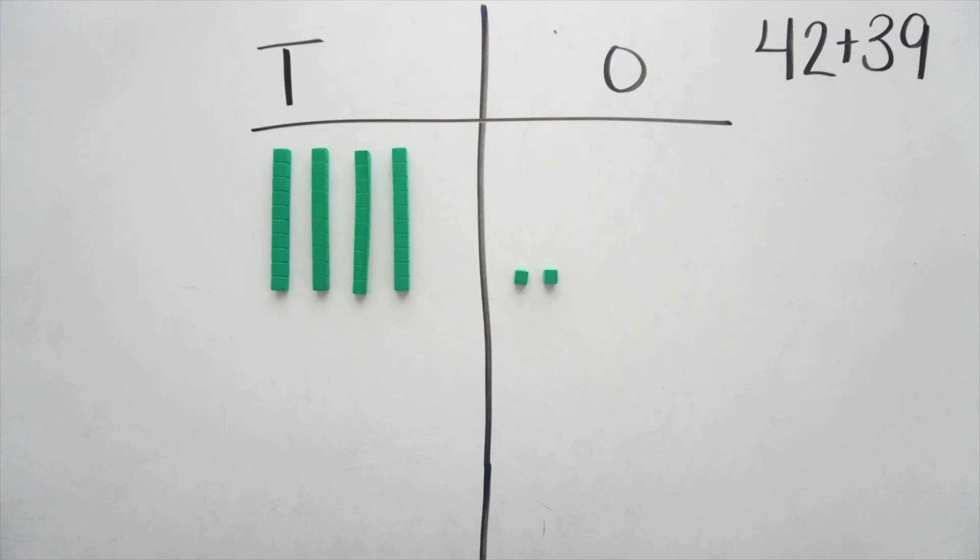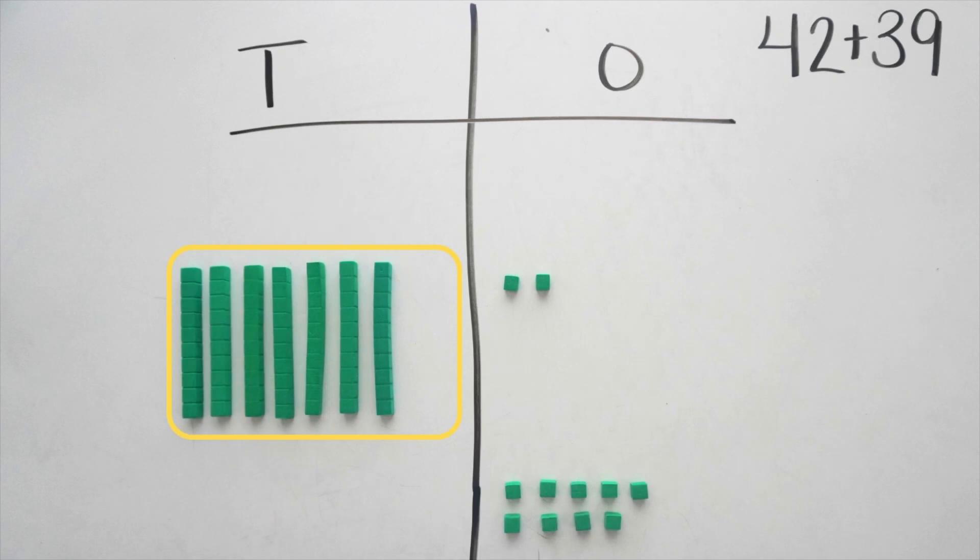Number four, addition. Base-10 blocks make addition much clearer because students can actually see the value of each place as they combine numbers.